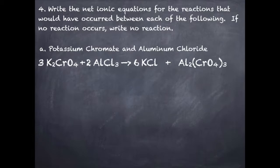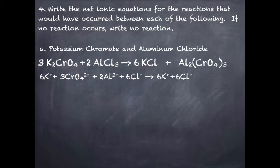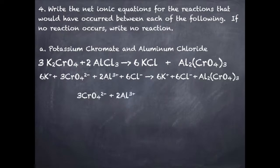Anything that is soluble I'm going to break up. Potassium chromate is soluble because everything with a Group 1 metal is soluble — so it becomes 6K⁺ plus 3 chromate ions. Aluminum chloride is soluble because there are only a couple exceptions for chloride — so 2 aluminum ions and 6 chloride ions. Potassium chloride is always soluble, giving 6 potassiums and 6 chlorides. Aluminum chromate has similar solubility rules as carbonate, so we assume it's insoluble. Crossing out spectator ions — potassium and chloride — gives the net ionic equation: 3 chromate ions plus 2 aluminum ions produces aluminum chromate.